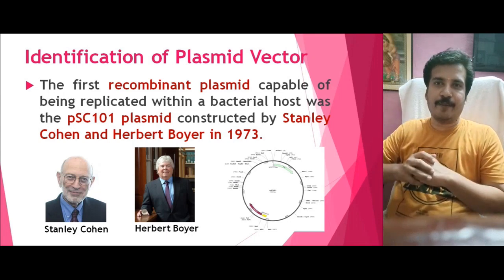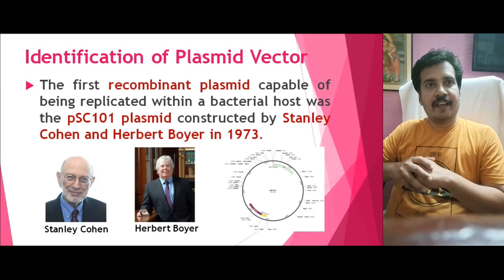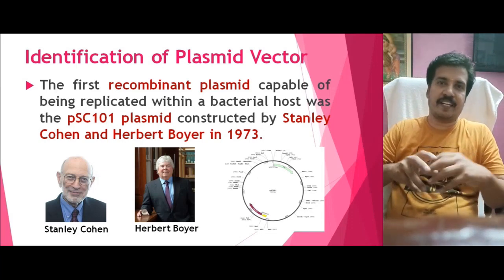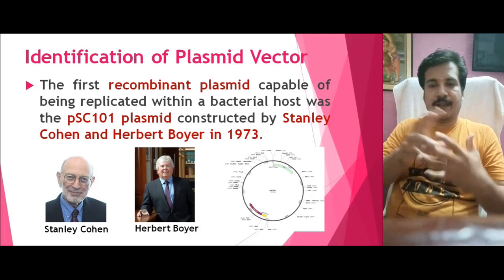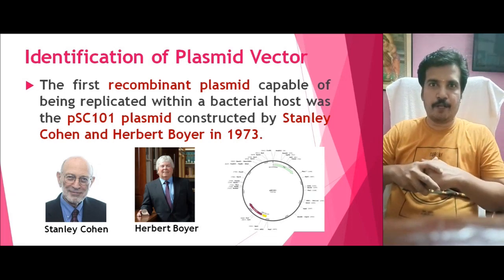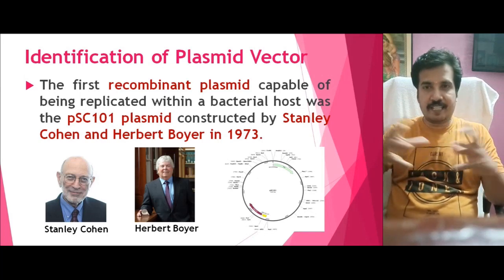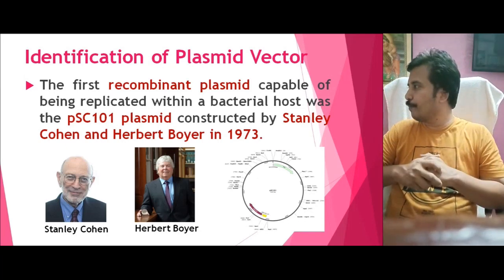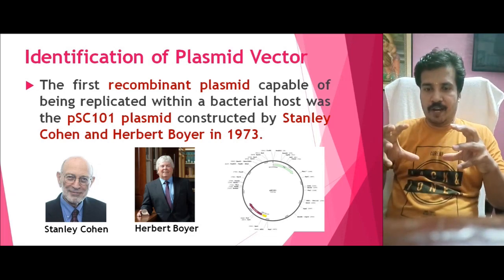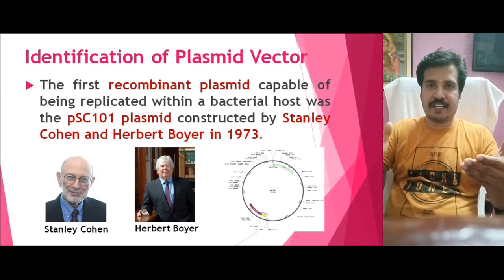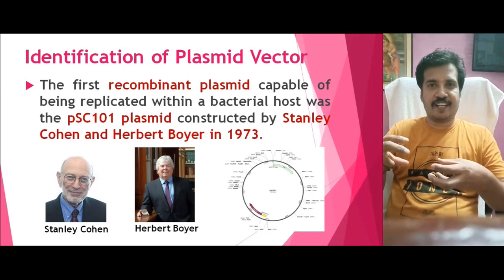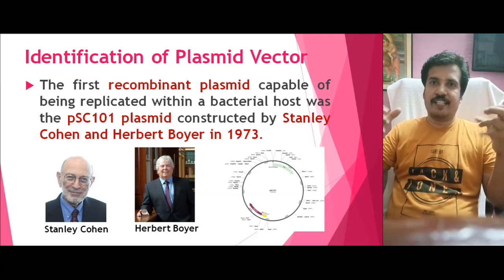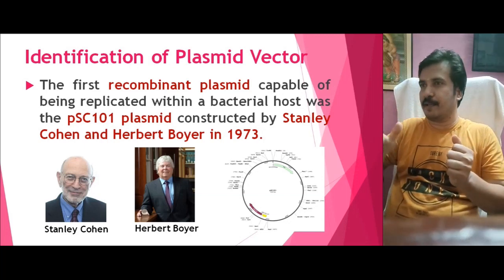A plasmid already exists in bacteria as an extra-chromosomal DNA. Just as extra-chromosomal DNA is present in mitochondria, a double-stranded circular DNA is present in bacterial cells called a plasmid, which generally transfers from one bacteria to another and produces desired characteristics. Stanley Cohen and Herbert Boyer exploited this ability and developed a plasmid called PSC-101. This plasmid has various restriction sites where it can be cut, the DNA inserted, and then delivered to a bacteria where it multiplies on its own. So the major tools identified were restriction endonuclease and the plasmid.